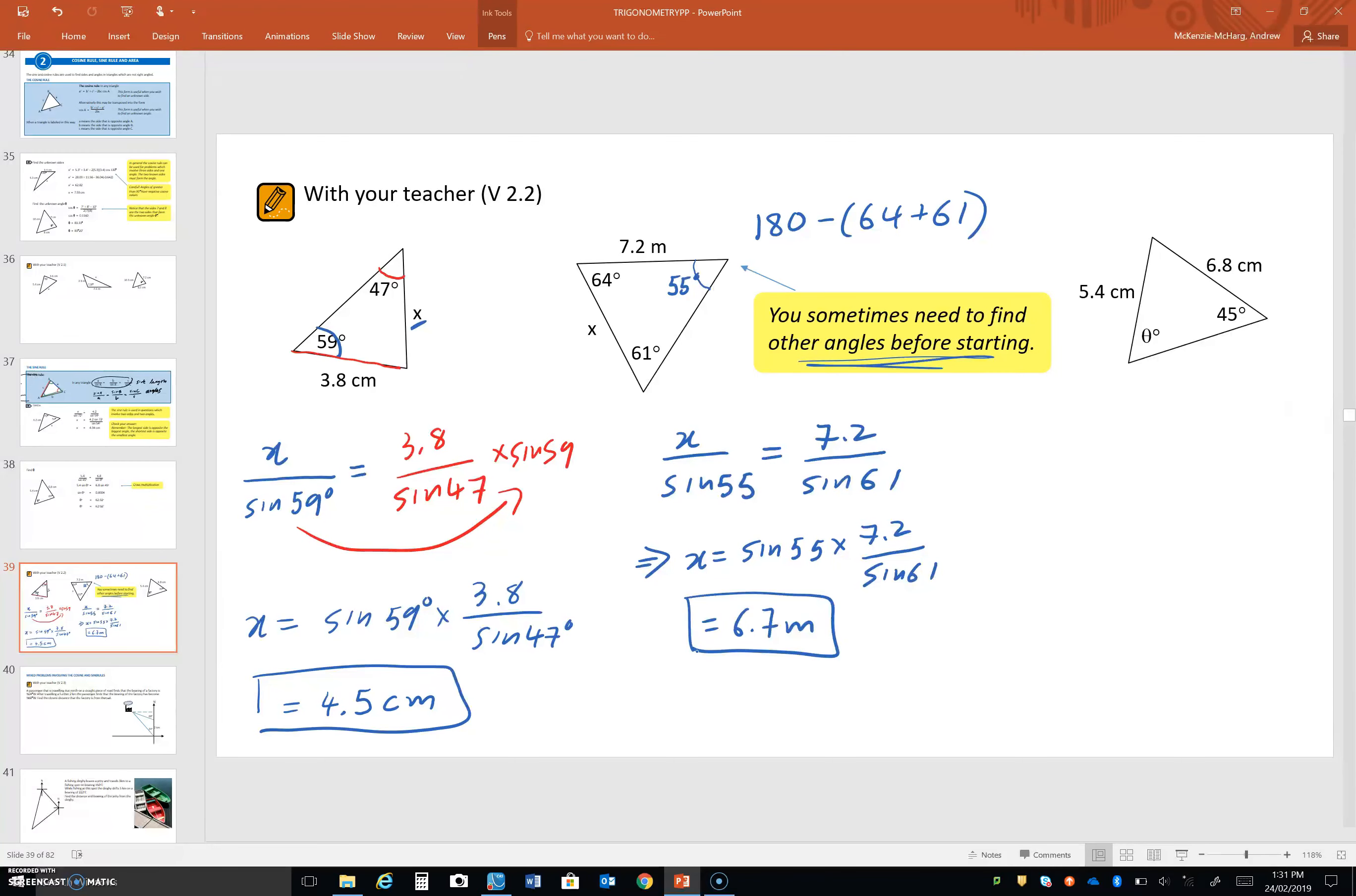Okay, so there's a couple where we're finding the unknown side lengths. This last one, obviously, we want to find this theta, an unknown angle. So, we're going to flip the sine rule this time.